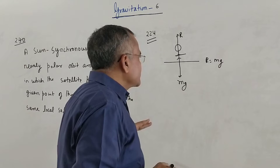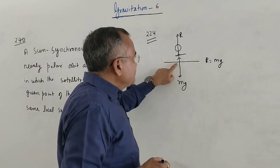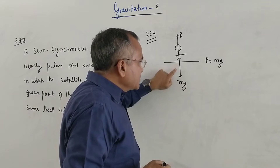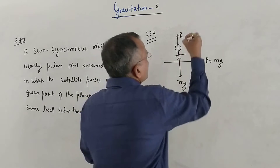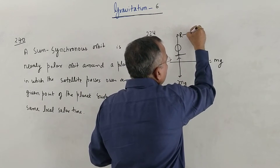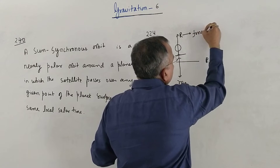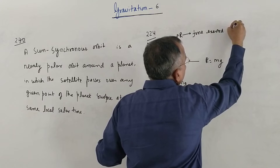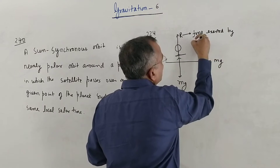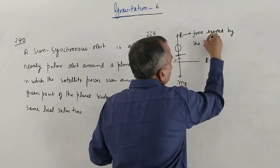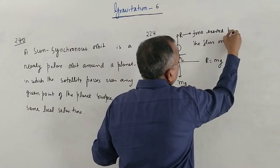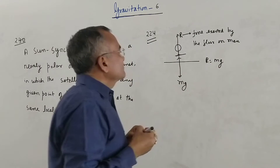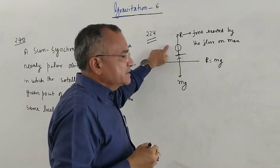To repeat: the person exerts force mg on the floor. Though the person doesn't feel that force directly, the floor exerts an equal force mg back on the person in the upward direction, and that is what the person feels. That is why he says he has weight.